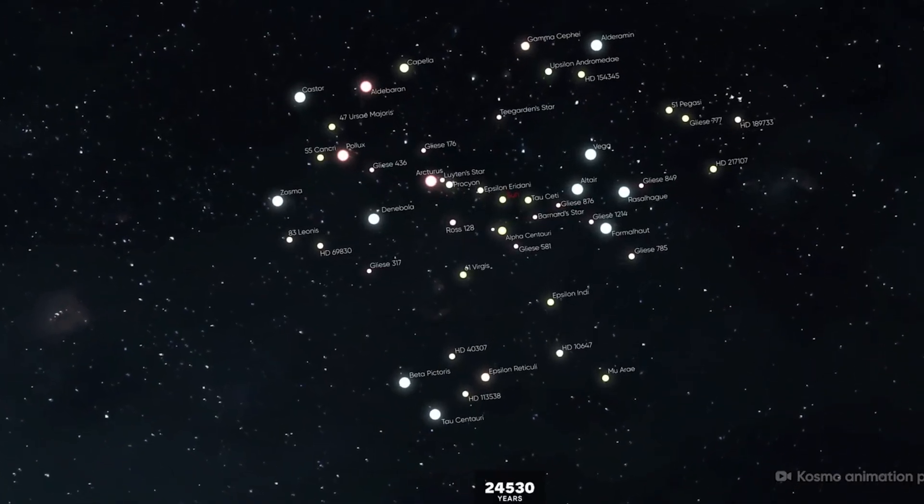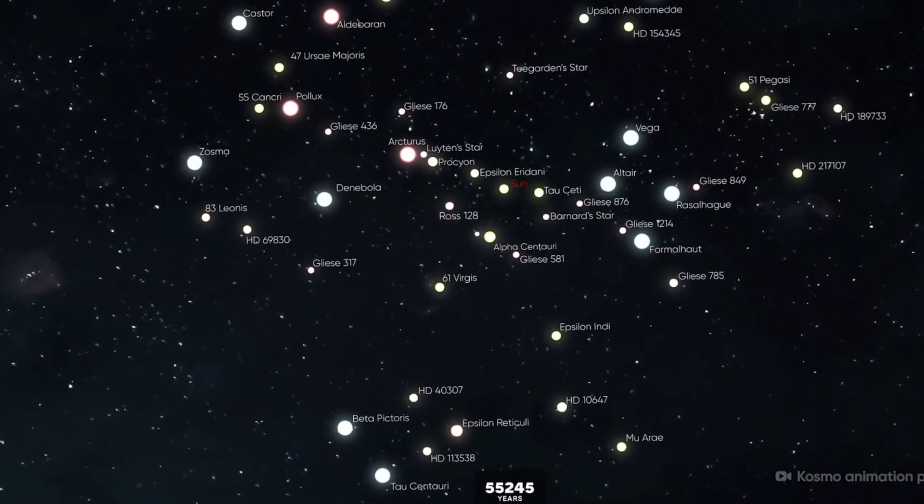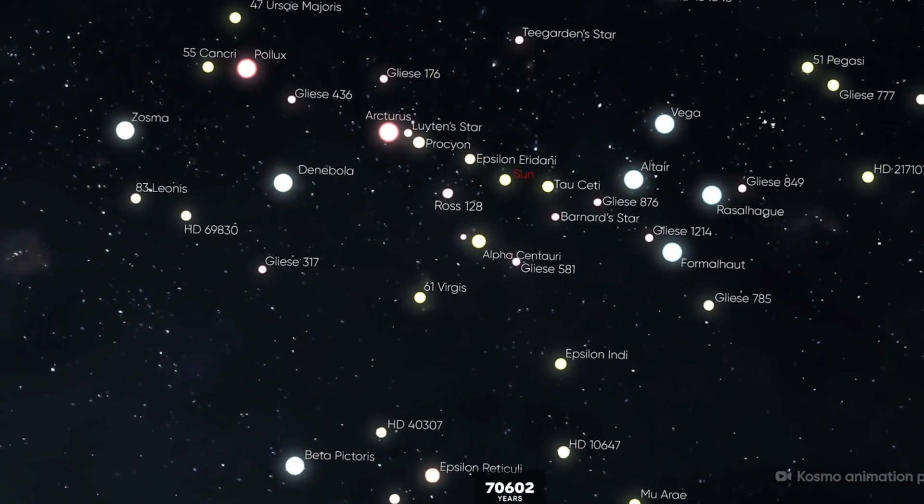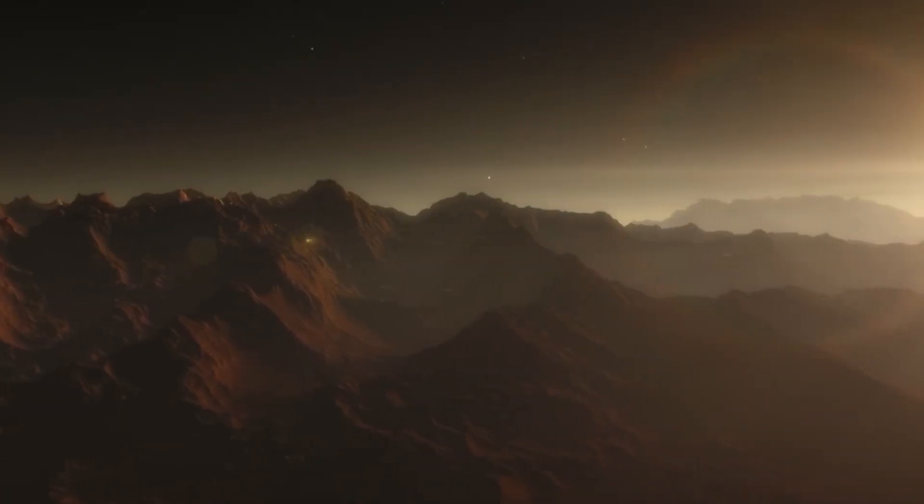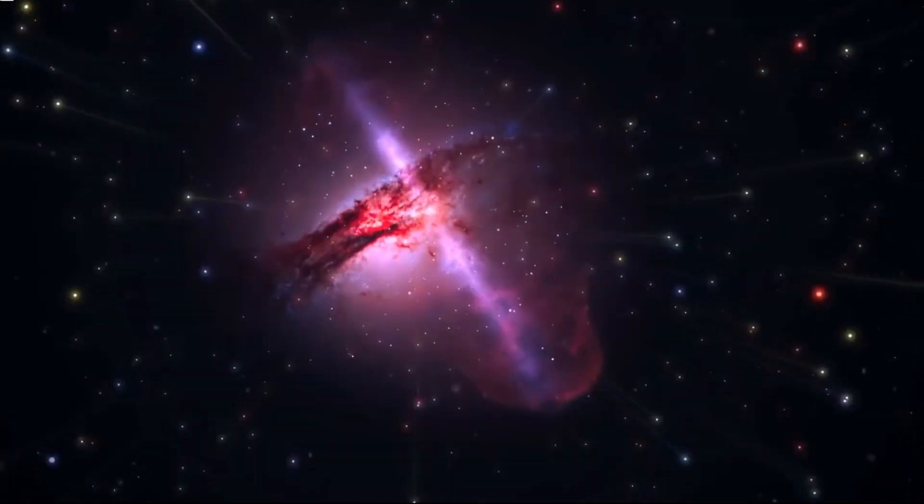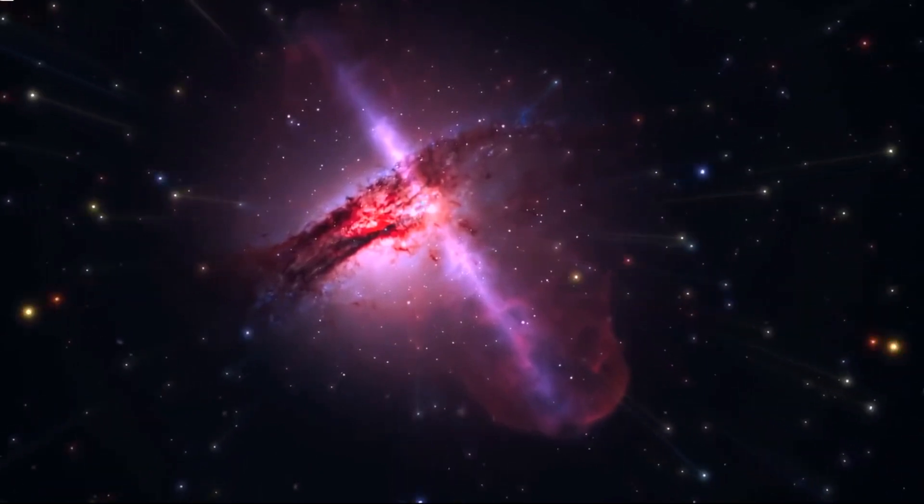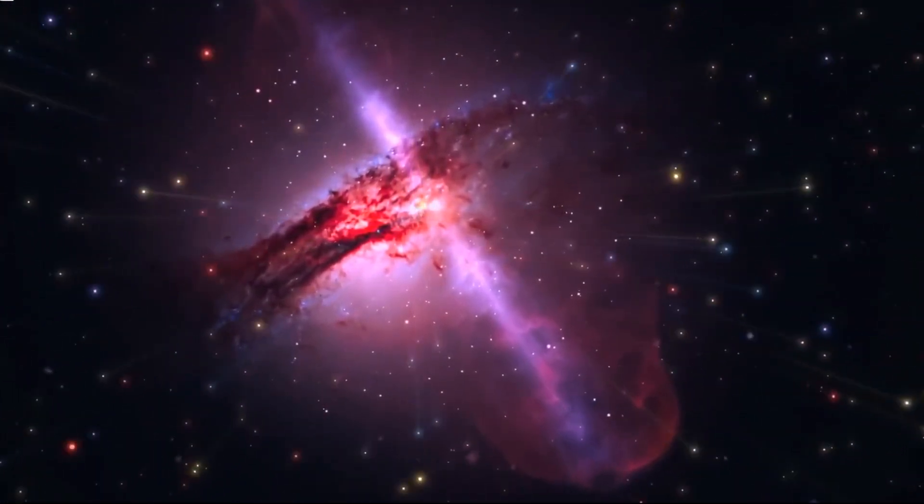The new image shows the nebula from a nearly head-on view, but if we could see it from its edge, NASA says its three-dimensional shape would more clearly look like two bowls placed together at the bottom, opening away from one another with a large hole at the center.